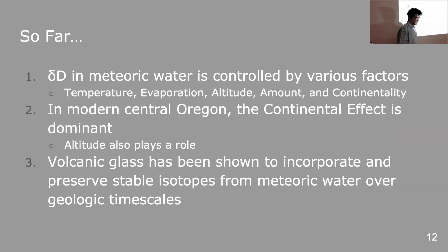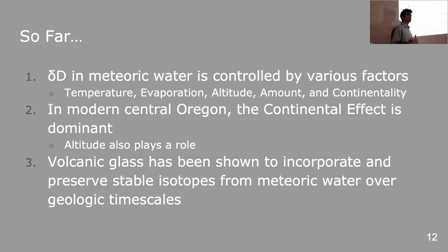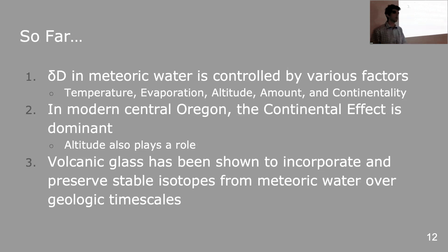So let's just recap everything I've said so far. First, delta D in meteoric water is controlled by various factors listed here. In modern central Oregon, the continental effect is dominant, but altitude also plays a small role in certain parts of eastern Oregon. And finally, volcanic glass has been shown to incorporate and preserve stable isotopes from meteoric water over geologic timescales.